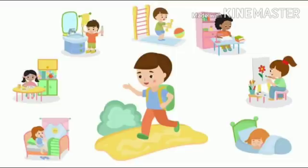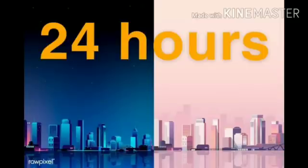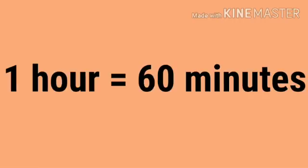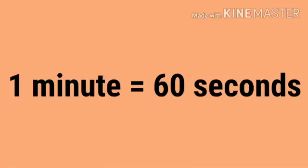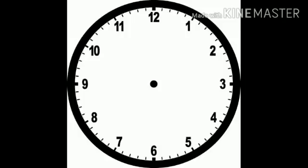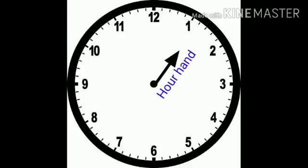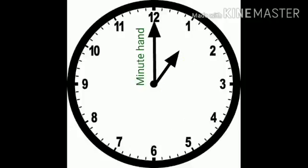We should know how to watch time in a clock. 1 hour is equal to 60 minutes and 1 minute is equal to 60 seconds. The clock is divided into 12 equal sections. Each section has a number like 1, 2, 3, 4, up to 12. Every clock shows numbers and has two hands. The small hand is the hour hand and the big hand is the minute hand. The front face of the clock is called the dial.